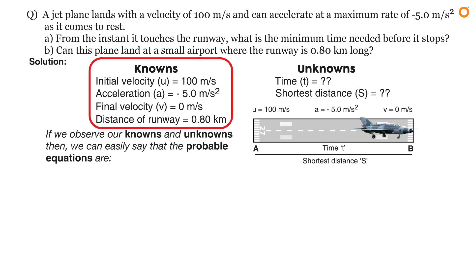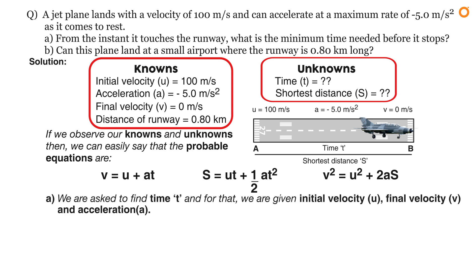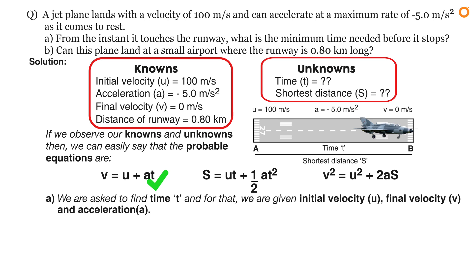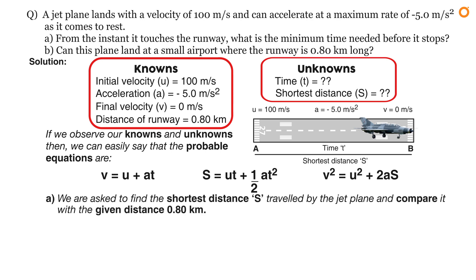Observing our knowns and unknowns, the probable equations are: v = u + at, s = ut + ½at², and v² = u² + 2as. For part A, we need to find time t, given initial velocity, final velocity, and acceleration — so v = u + at is the right formula. Applying the values, we get time t = 20 seconds.